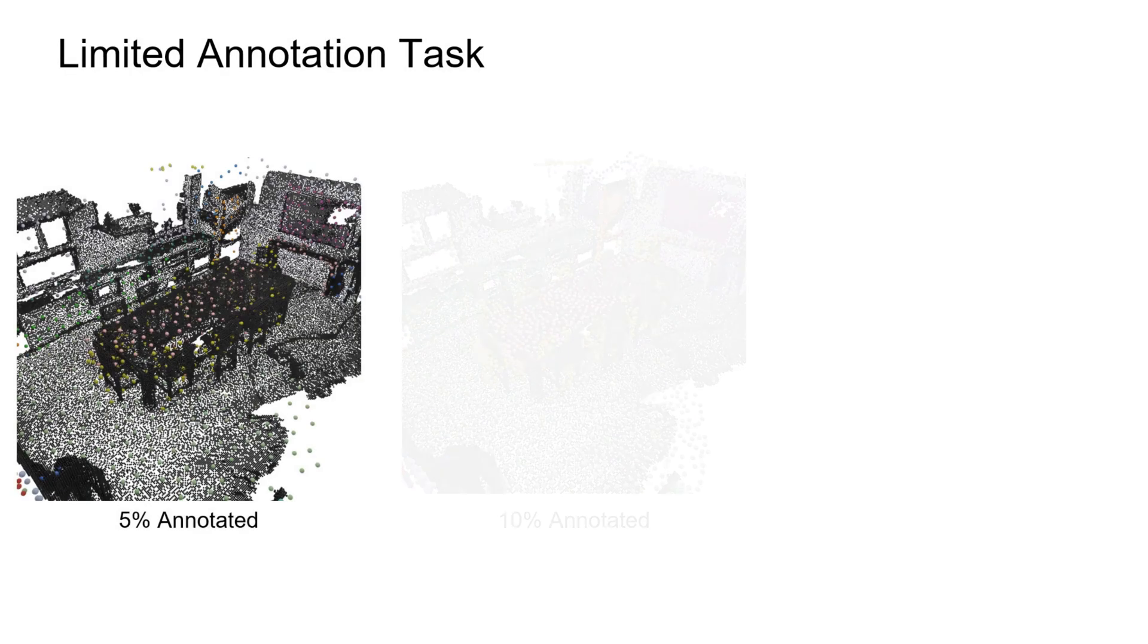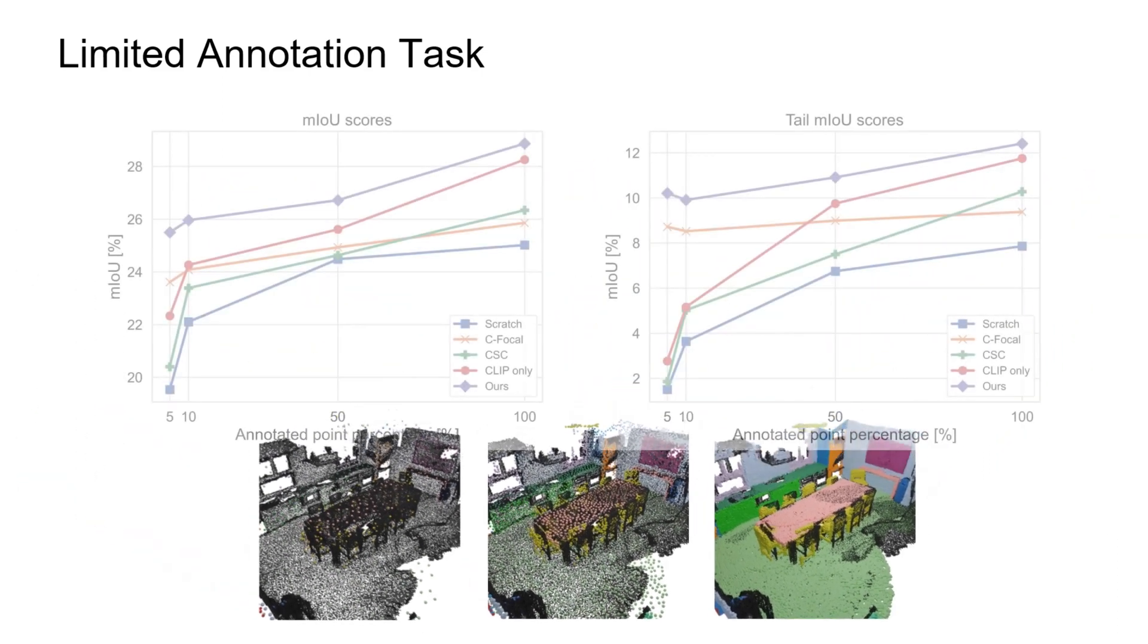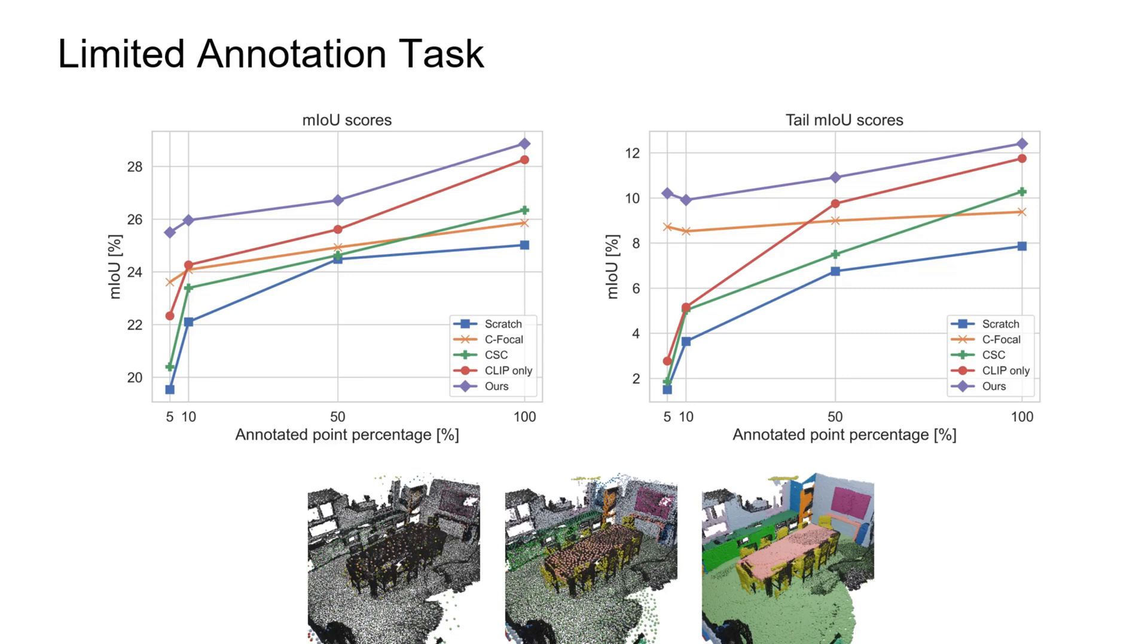As the number of categories increases, annotation efforts become more difficult, emphasizing the need to evaluate in settings with reduced supervision. When only 5% of labeled data is available, our language-guided pre-training produces significant improvements over baseline alternatives.